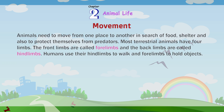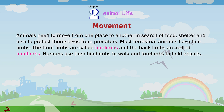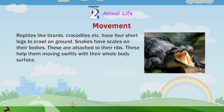Movement. Animals need to move from one place to another in search of food, shelter, and also to protect themselves from predators. Most terrestrial animals have four limbs — the front limbs are called forelimbs, and the back limbs are called hind limbs. Humans use their hind limbs to walk and forelimbs to hold objects. Reptiles like lizards and crocodiles have four short legs to crawl on the ground. Snakes have scales on their bodies attached to their ribs, which help them move swiftly using their whole body surface.